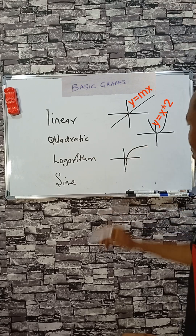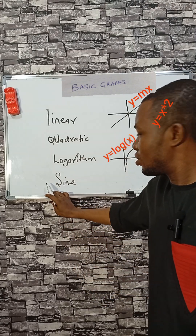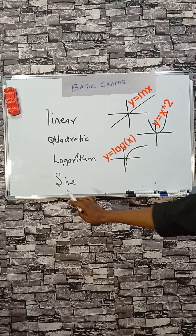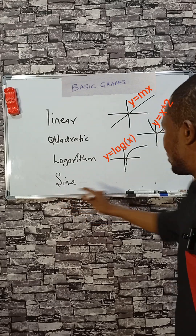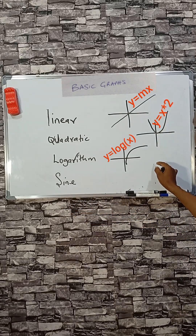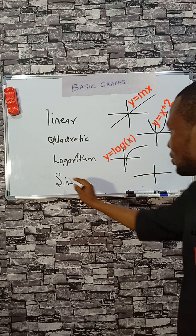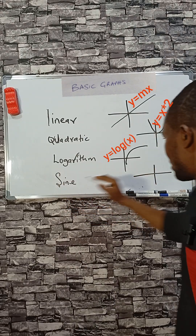A trigonometric graph — like the sine graph — looks like the letter S, like this.